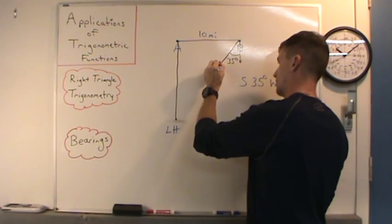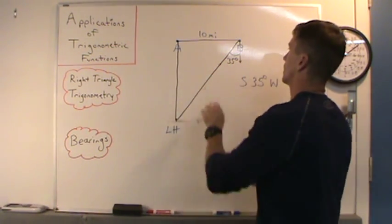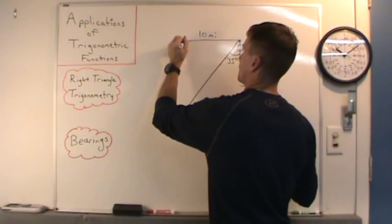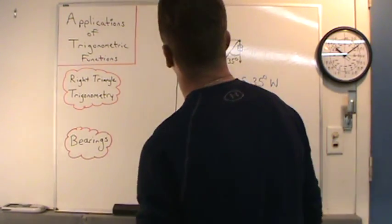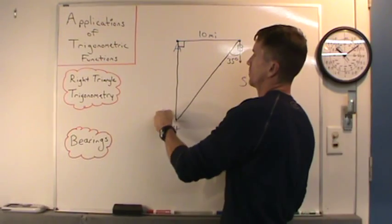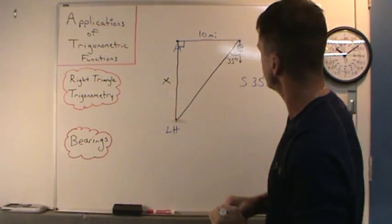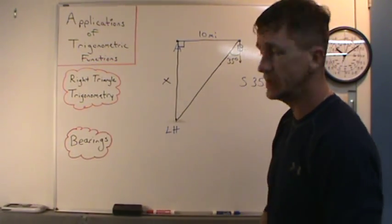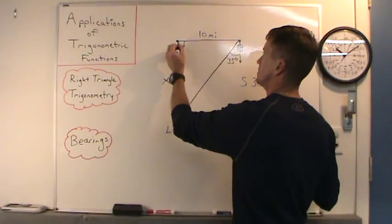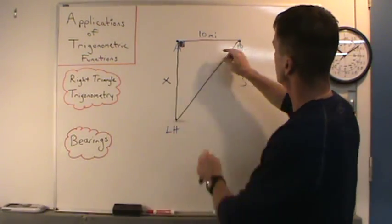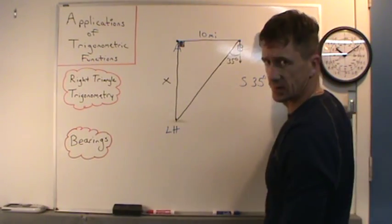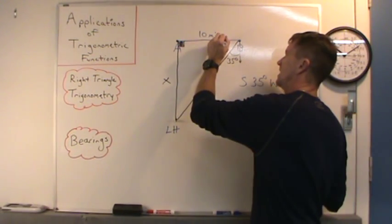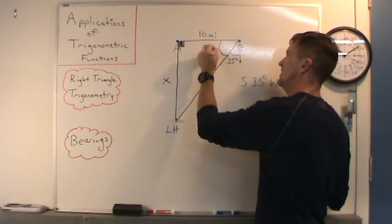We can see a right triangle right here. We need this distance from Ship B to the lighthouse — we can call that x. We need an angle in here. The three angles add up to 180 in this right triangle. That right angle is 90 degrees. These two other angles have to sum to 90 degrees, so if that's 35, then 90 minus 35 is 55. This angle right in here is 55 degrees.